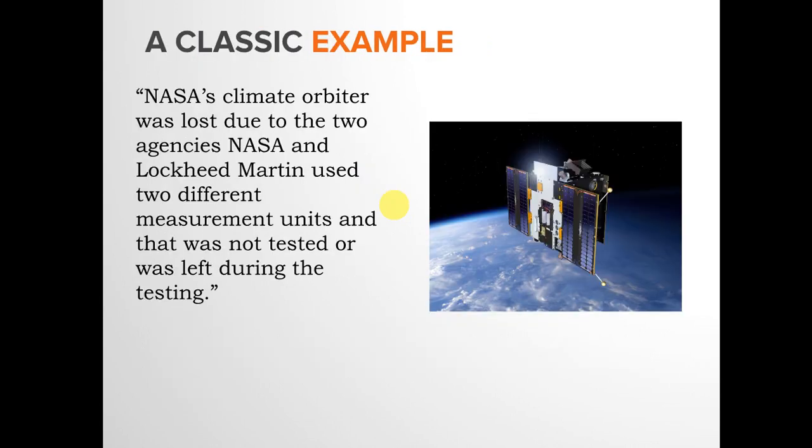A classic example of why testing is important: NASA's Mars Climate Orbiter was lost because NASA and Lockheed Martin used two different measurement units, and this was not thoroughly tested. This highlights a lack of integration testing — which is done when two components are merged to verify they work correctly together. Millions of dollars were lost as a result.